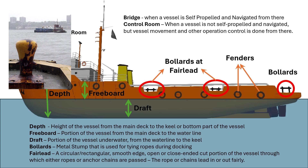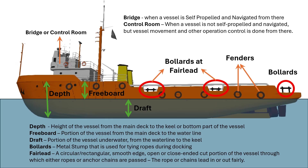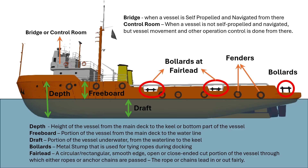Bollards are solid metal structures fitted on deck used for tying the vessel to a jetty or pier. Sometimes bollards are also used to tow another vessel by tying a rope around them. Fenders are either solid rubber or air cushion hung at the side of the vessel to minimize impact force when the vessel comes to the jetty or another vessel comes alongside.